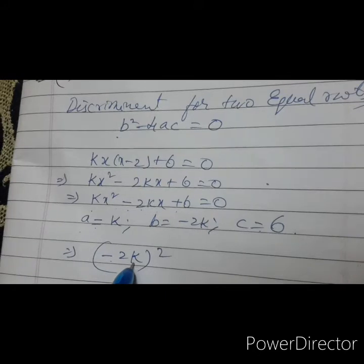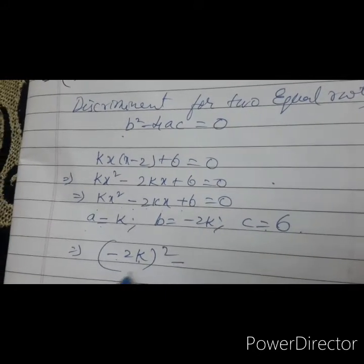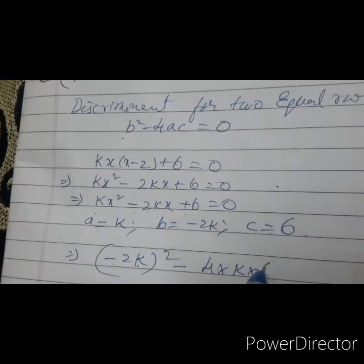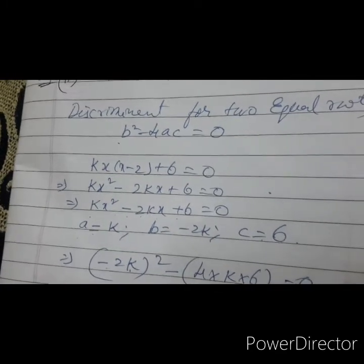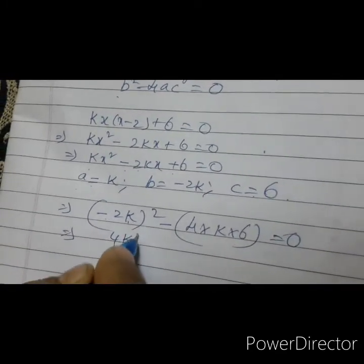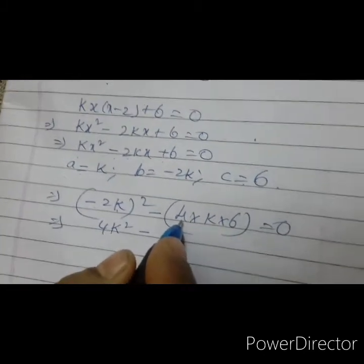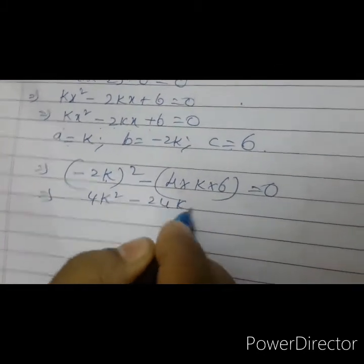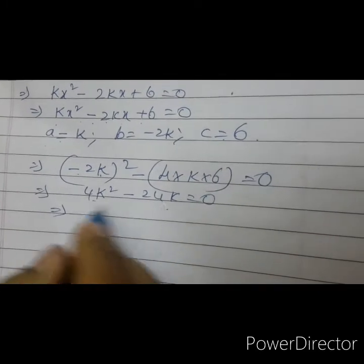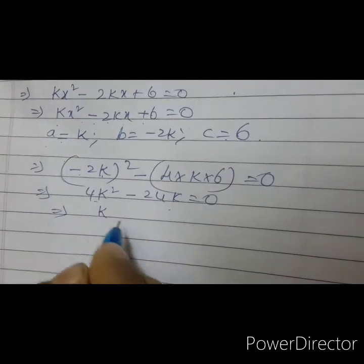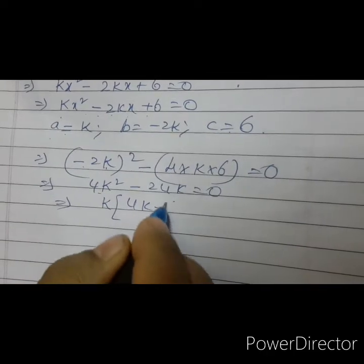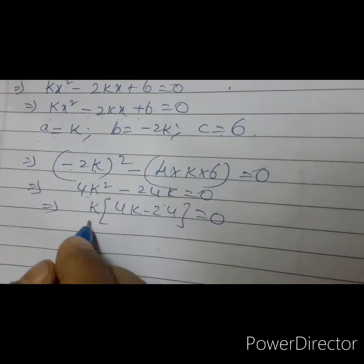Substituting: minus 2K whole squared minus 4 into K into 6 equals to 0. Opening the bracket: 4K squared minus 24K equals to 0. In these both terms, K is common.